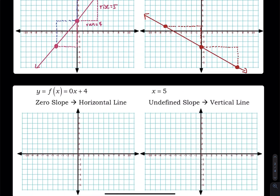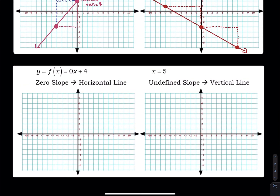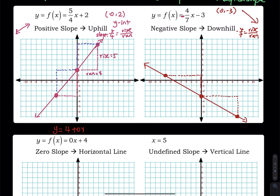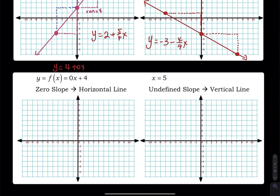The next one is 0x plus 4. The slope is zero — zero is the coefficient of x, the number in front of x. A zero slope means you have a horizontal line: y equals 4. So you just draw a flat horizontal line at y equals 4. We will need that a lot in uniform distribution.